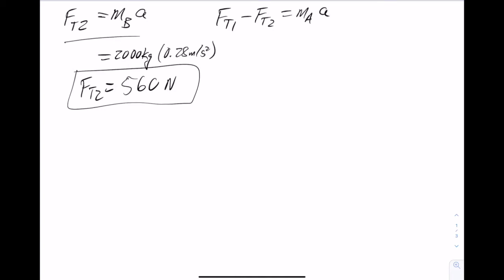And so now I can use that in my other equation, but first let me solve that for the other unknown tension. So I add Ft2 to both sides, and that's going to tell me that the force of tension 1 is equal to Ft2 plus the mass of A times acceleration. So that's 560 newtons plus it was 3,000 kilograms times 0.28 meters per second squared. So that's going to give me that Ft1 is 1,400 newtons.